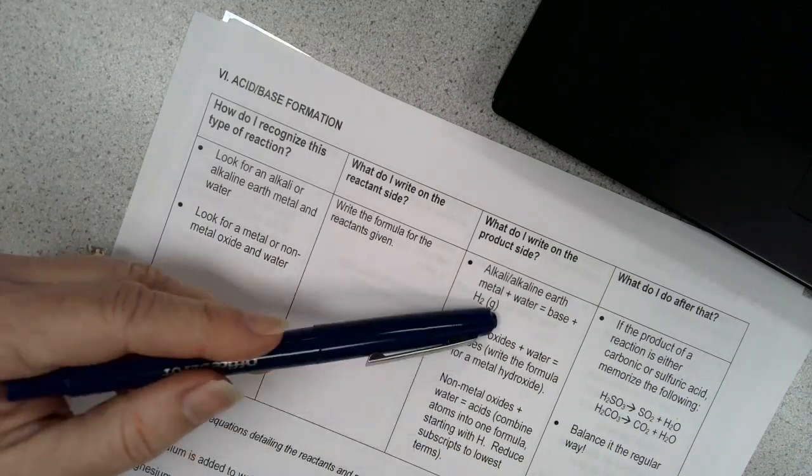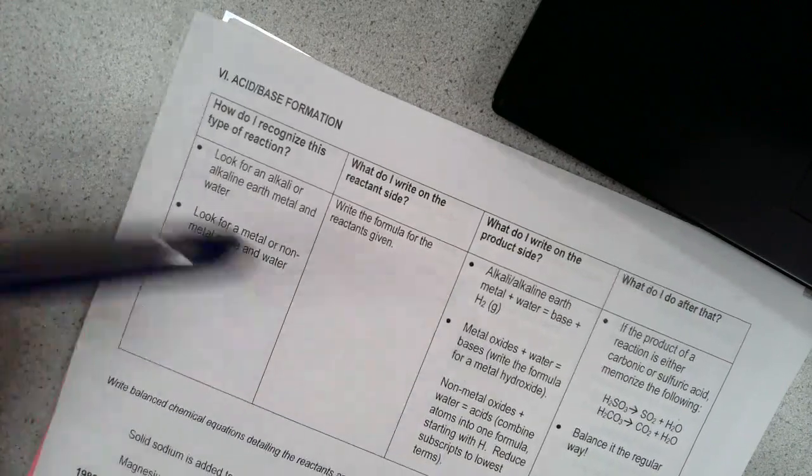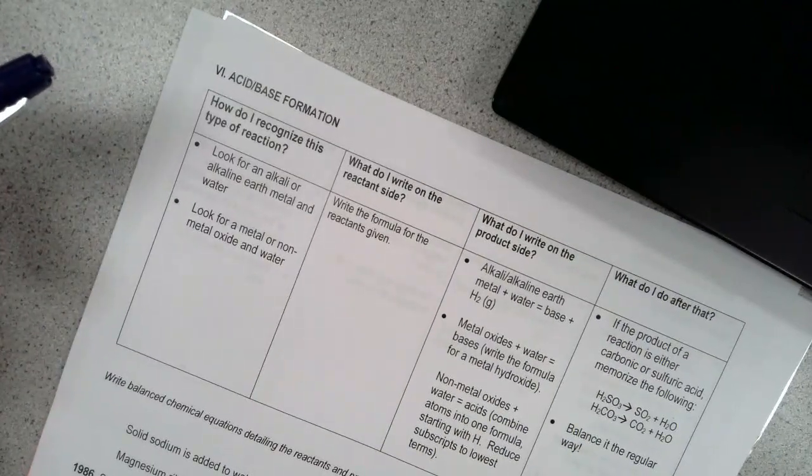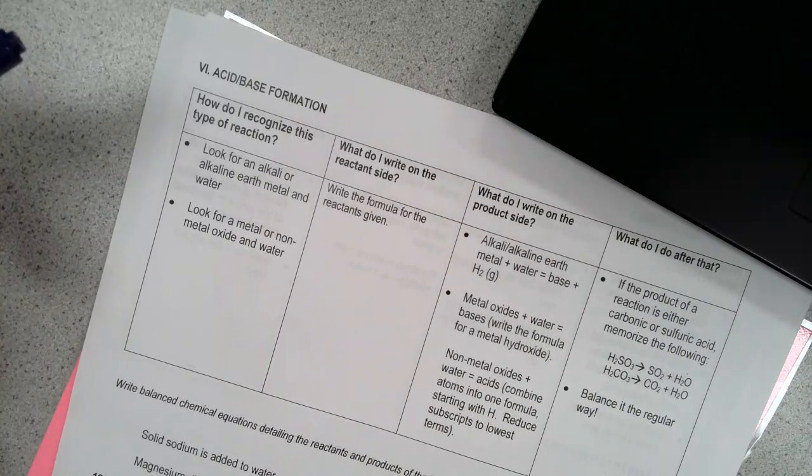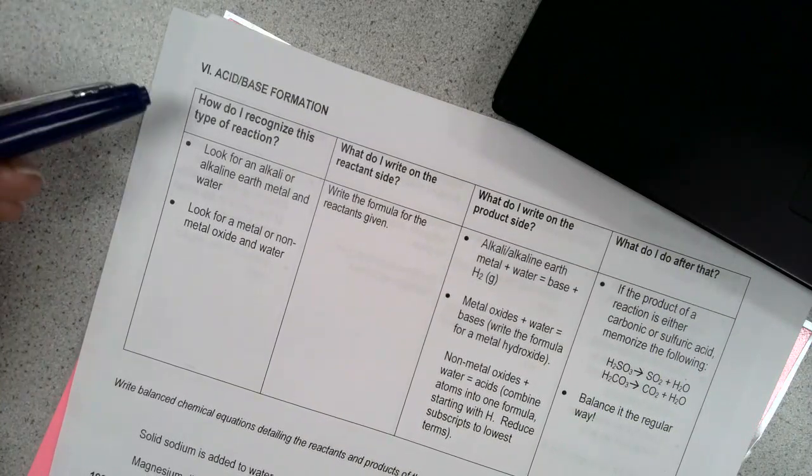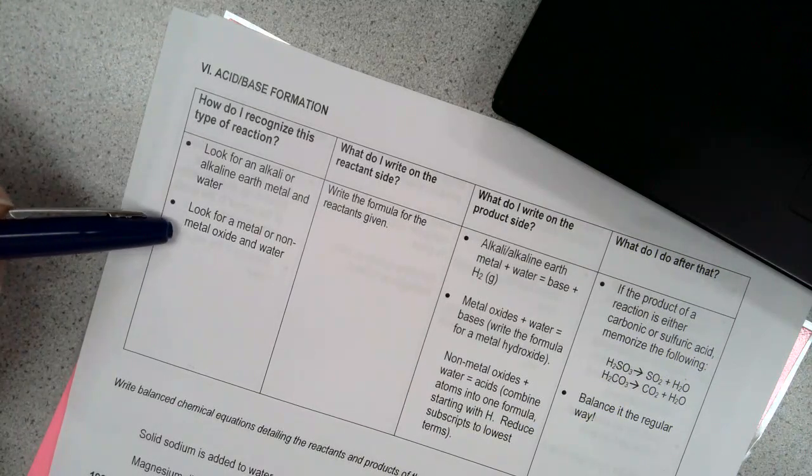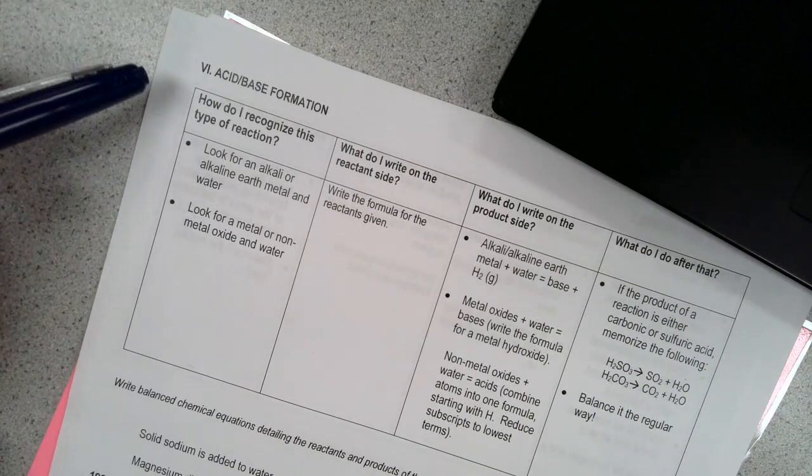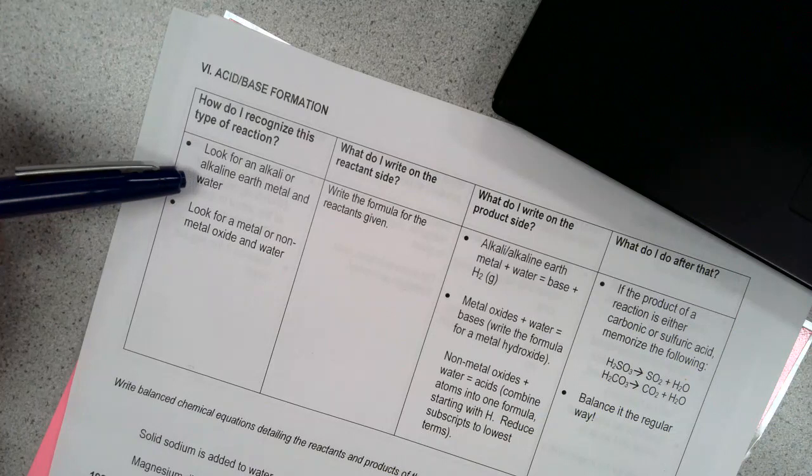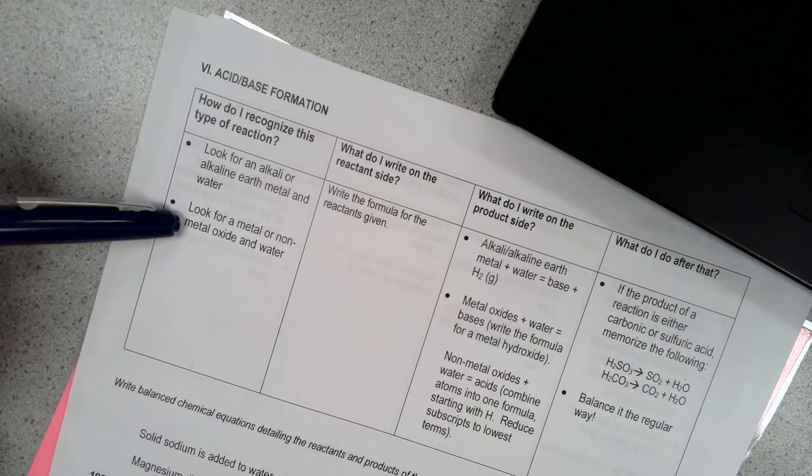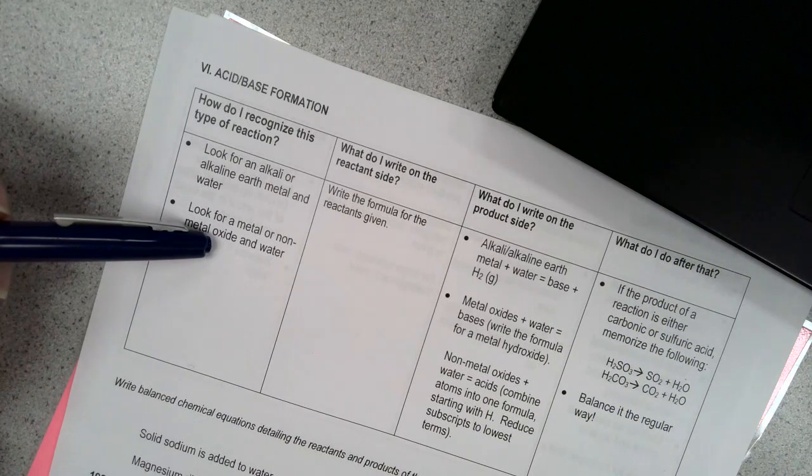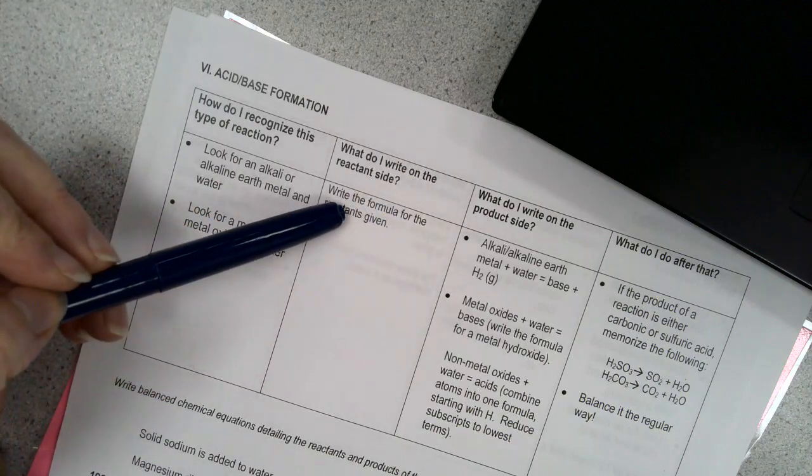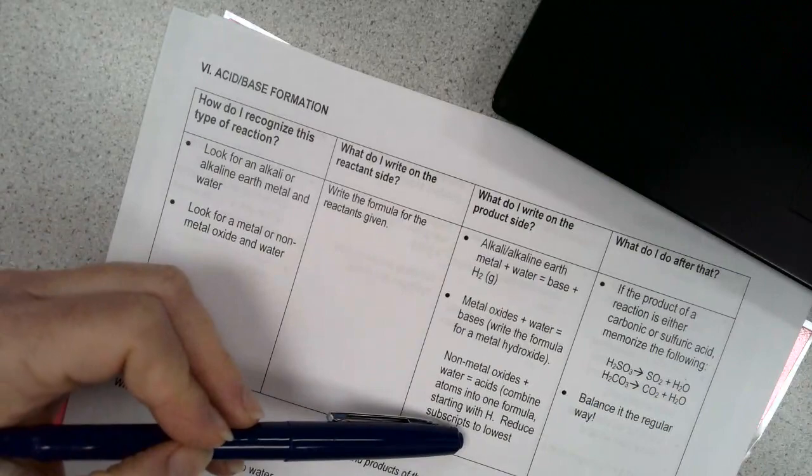So we're going to look at these different rules here and go by those as we go through these today. One thing I want to point out before we start, there is a mistake on this sheet and I want to see if you guys can catch it as we go. So first things first, how do we know it's this type of reaction? We're looking for an alkali or an alkaline earth metal, remember those are the first two columns in the periodic table, reacting with water, or we're looking for a metal or non-metal oxide and water. So those are the two things we're looking for here. In each of these reactions, we'll identify them as we go, then we're going to translate them and look at these rules to see what it forms.